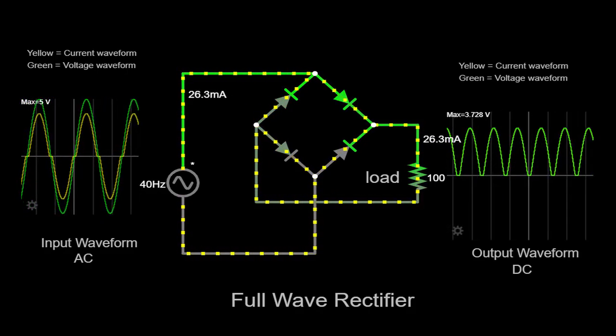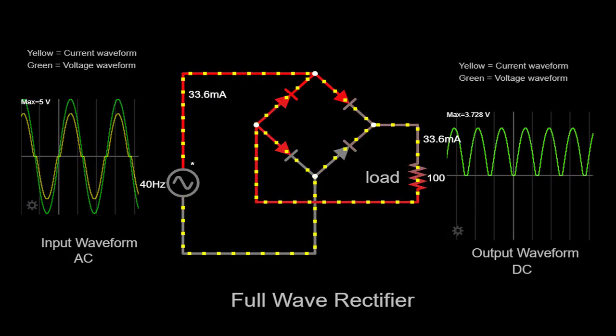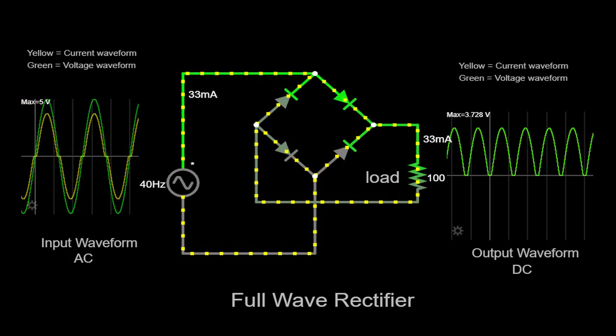This current path creates a voltage drop across the load resistor, resulting in a corresponding voltage waveform on the output.